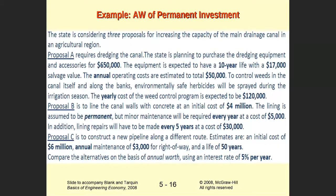This example has three alternatives or three scenarios. The first one has a first cost. Proposal A requires bridging the canal. The state is planning to purchase equipment at this initial cost. The equipment is expected to have a 10-year life, and $17,000 is the salvage value at the end of those years. The annual operating cost is $50,000 to control weeds in the canal, and environmentally safe herbicides will be sprayed during irrigation season at a yearly cost of $120,000.